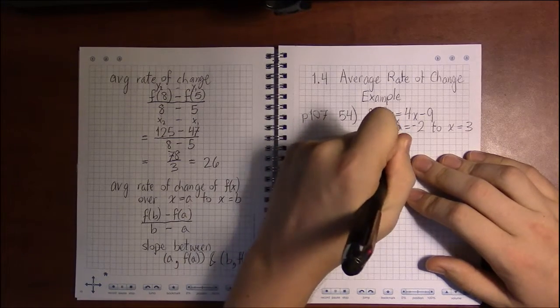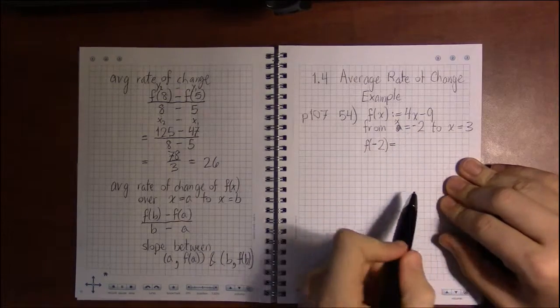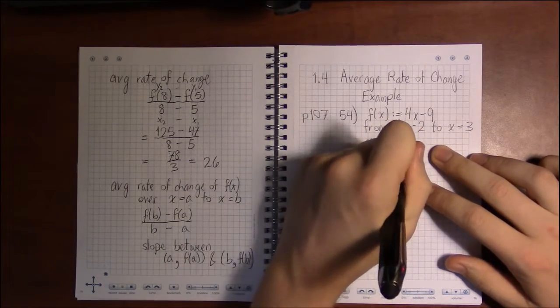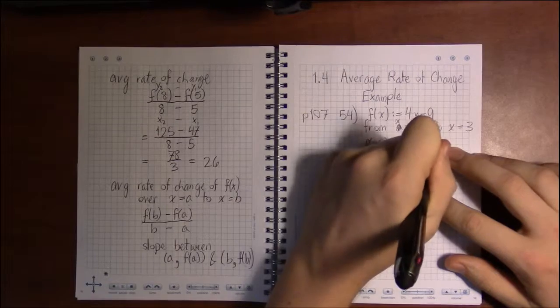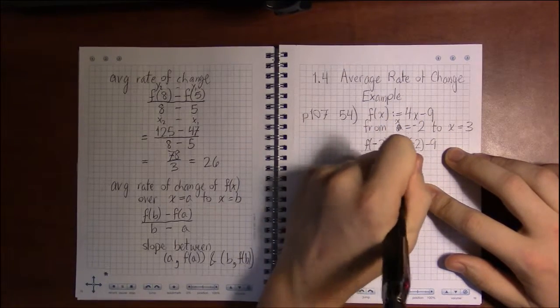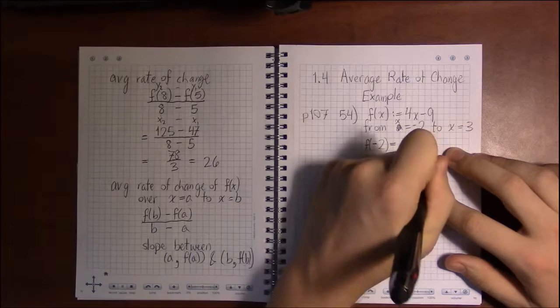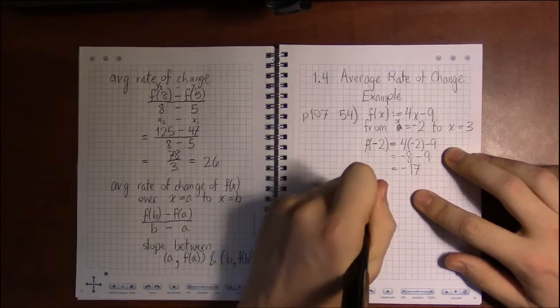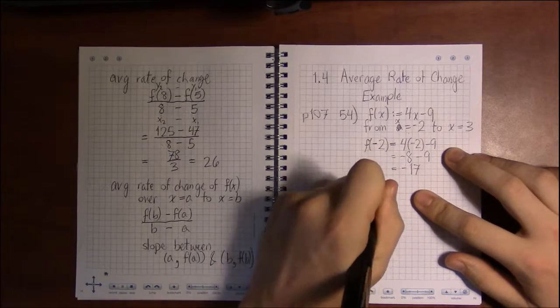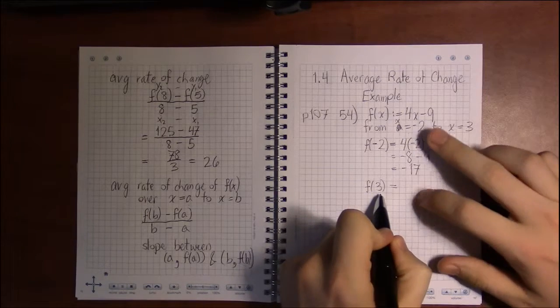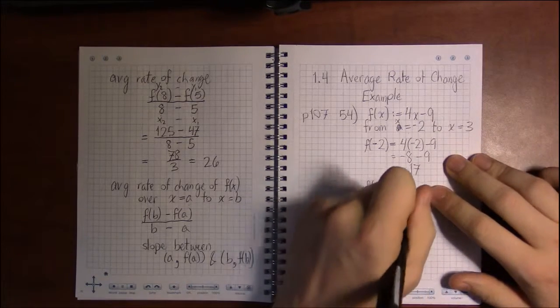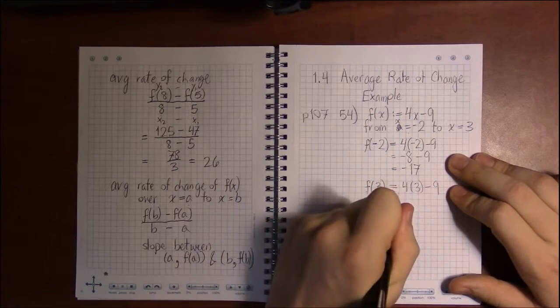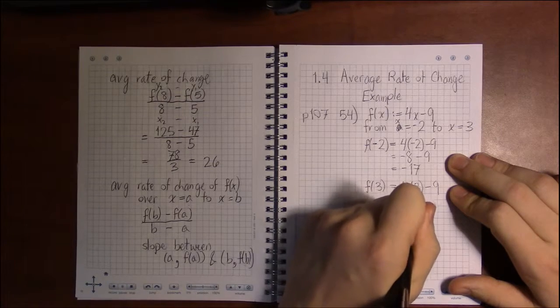So we plug -2 in for x: 4 times -2 minus 9, and we get -8 - 9, that's -17. Now the y value for x = 3, we get by plugging 3 in for x, so 4 times 3 minus 9, that's 12 - 9 or 3.